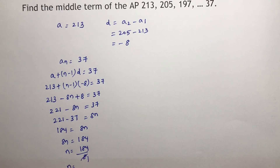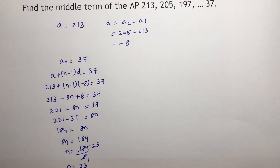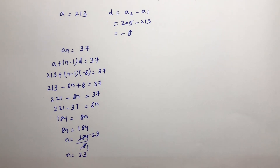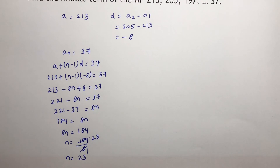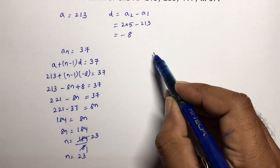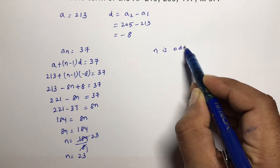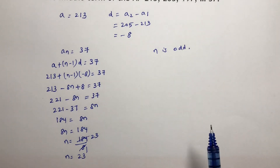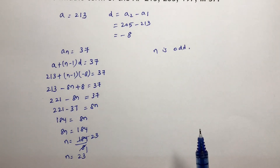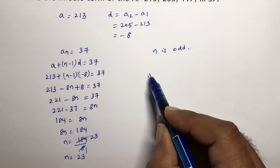So 8n equals 184, therefore n equals 184 divided by 8, which is 23. So there are a total of 23 terms. The value of n is odd, meaning an odd number of terms, so the middle term will be only one term.